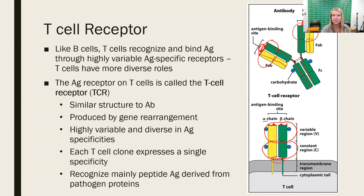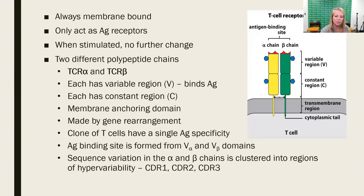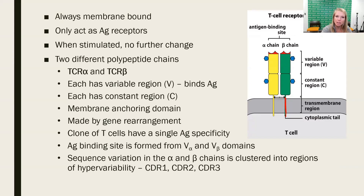Something different with the T cell receptor is that it is never going to be secreted — it will always be embedded into the lipid bilayer. So every T cell receptor has a transmembrane region along with the variable region at the top, the constant region, and then the transmembrane region. We call these chains TCR alpha and TCR beta — two polypeptide chains, each having a variable region and a constant region.